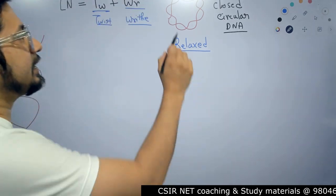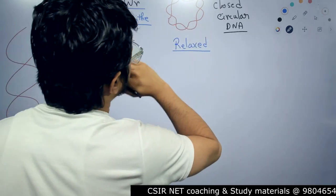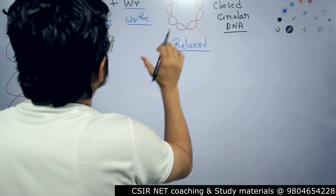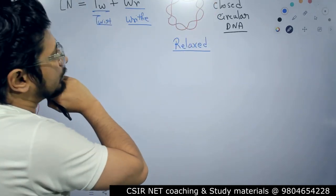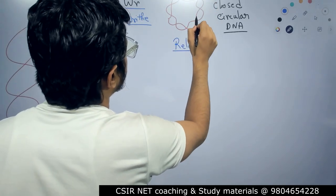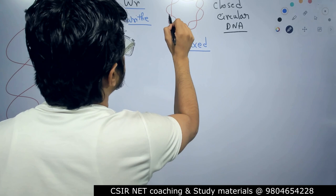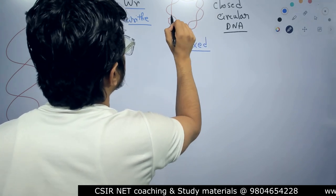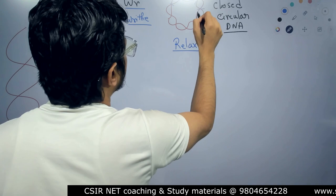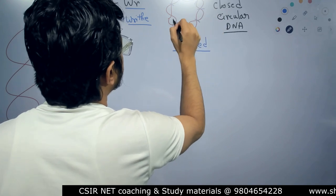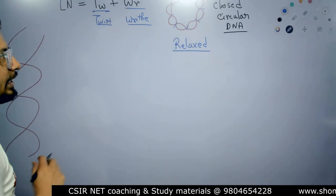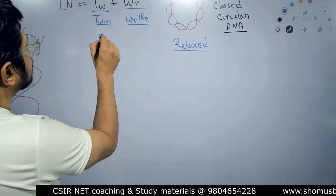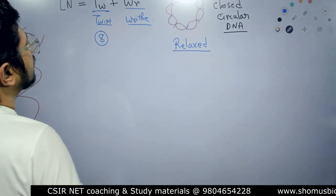So twist is the number of times one strand of the DNA crosses over the other strand. In this particular example, if I count the number of twists, I get 8. So the value for the twist here will be 8. But this is the relaxed state.